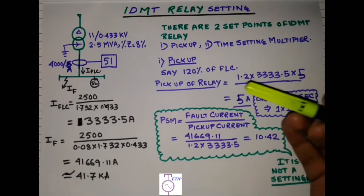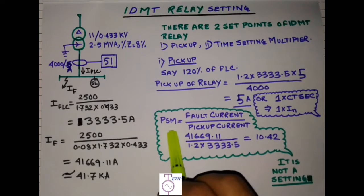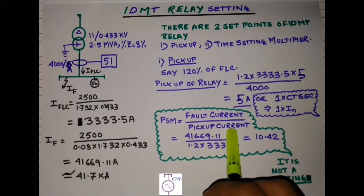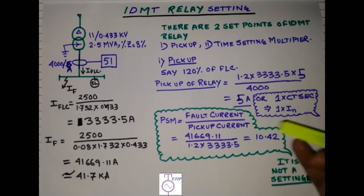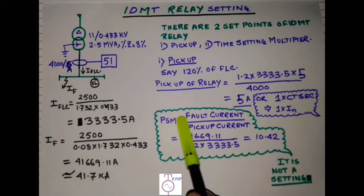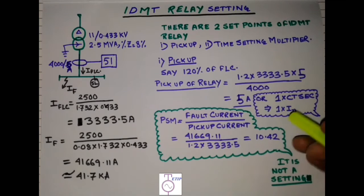Now we will come to the next part of the calculation, that is PSM or plug setting multiplier. Plug setting multiplier is fault current by pickup current. We can say it in other way: fault current in relay coil by pickup current in relay. Fault current is 41669 and pickup current is 120% of full load current, so 1.2 into 3333.5, this is 10.42. Now remember it is not a setting. Please remember this thing, this is not a setting. You don't have to put this value of PSM anywhere to set your relay, but this PSM is required to proceed to the next step.